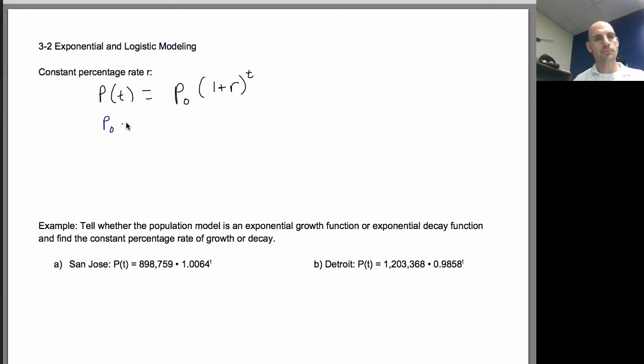So P sub 0 is our initial population. What are we talking about? We're talking about population growth or population decay or exponential growth or exponential decay. So our P sub 0 is what did we start out with? From there we grew or from there we decayed. And so our P sub 0 is our initial population. What we started out with. T is our time in years, and that's important to know years because it's going to affect the way that we calculate T later in this section. R is the rate.